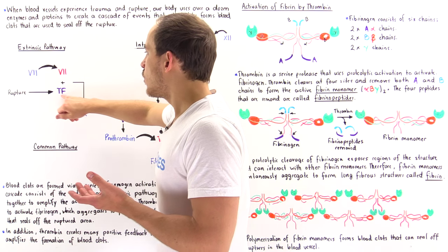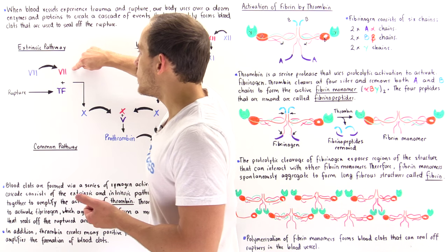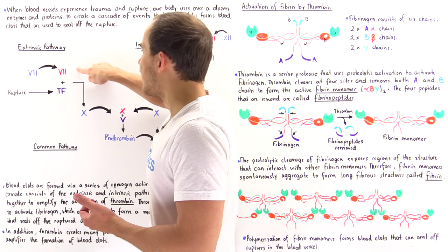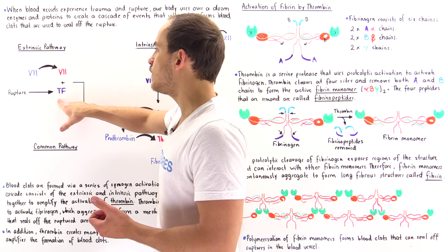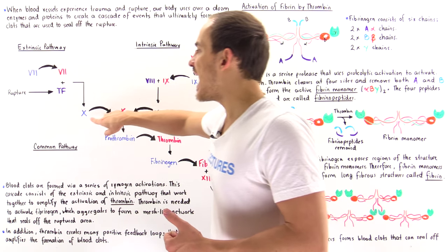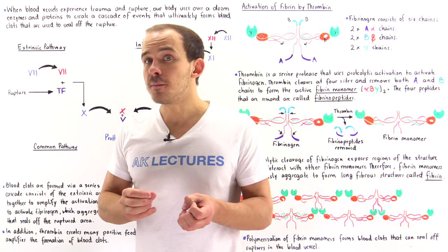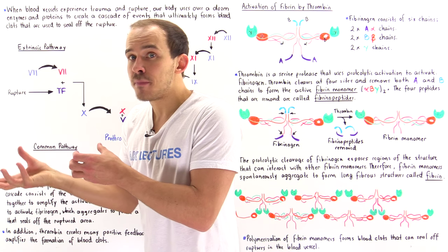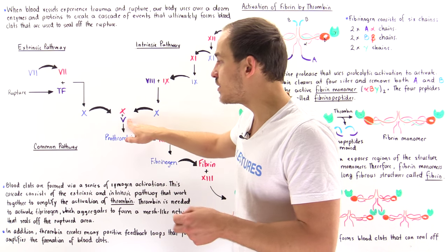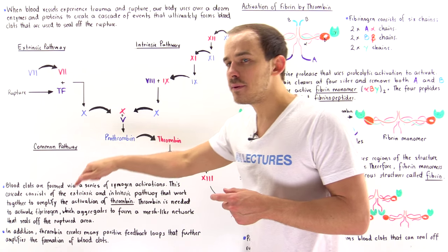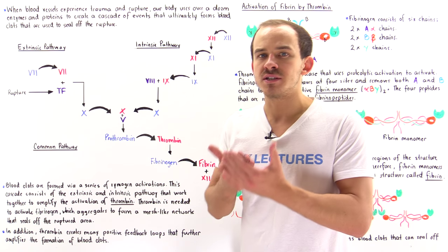Once we have the rupture and the exposure of the tissue factor, zymogen 7 is activated into its active form. Enzyme 7 then binds onto the tissue factor to form an active complex, which goes on to activate zymogen 10 into its active form. This is the extrinsic pathway, and its entire purpose is to create a quick response and activate enzyme 10, which combines with protein 5 to activate prothrombin into thrombin.